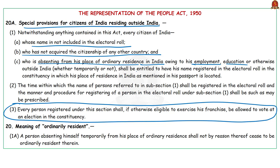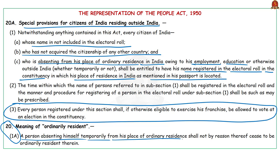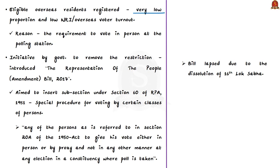These individuals can get registered in the electoral roll of the constituency which is their place of residence in India as mentioned in their passport. To address the question of ordinary residence, the Representation of People Act 1950 provides under Section 21A that a person absenting herself temporarily from her place of ordinary residence shall not cease to be ordinarily resident. Based on this, non-resident Indians were able to exercise their right to vote, but a very low proportion of eligible overseas residents actually registered, and it did not bring the expected overseas voter turnout.